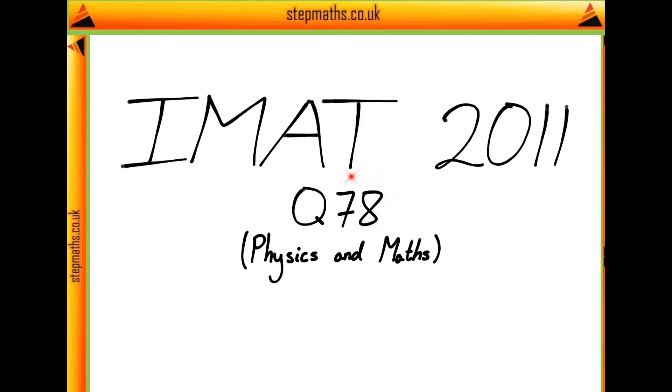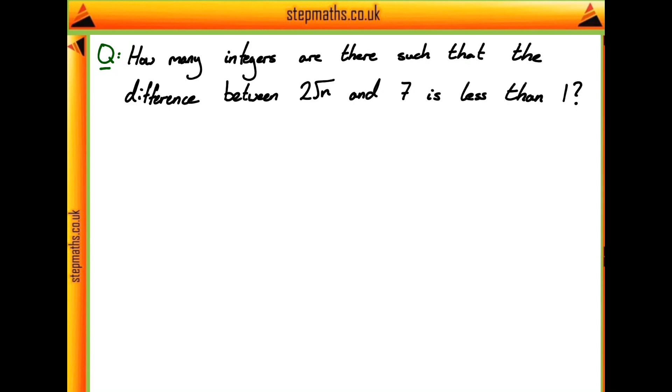Here we're going to look at question 78 from the IMAT 2011 paper. In this question, we're asked how many integers are there such that the difference between 2 root n and 7 is less than 1.